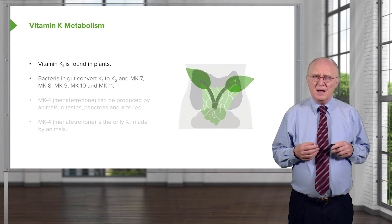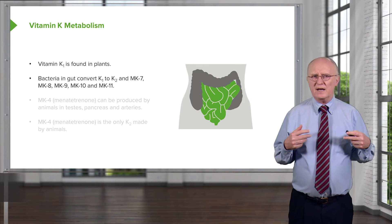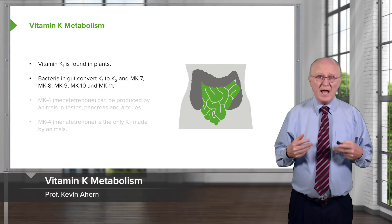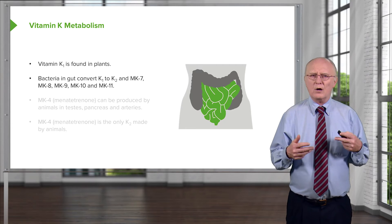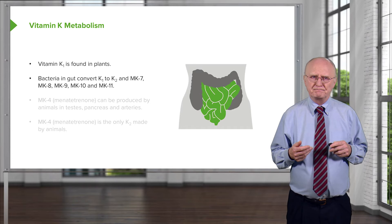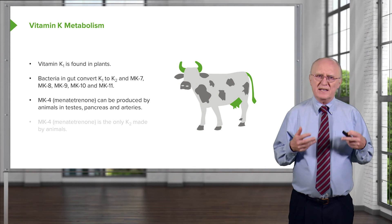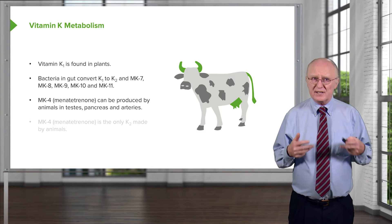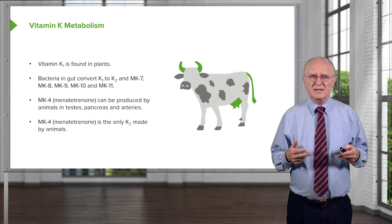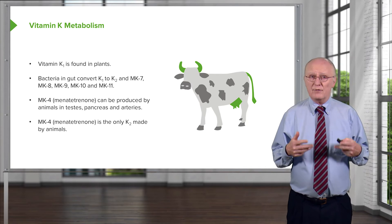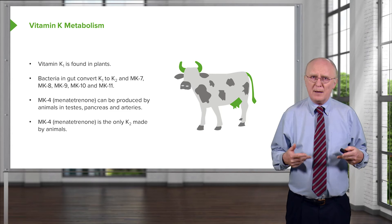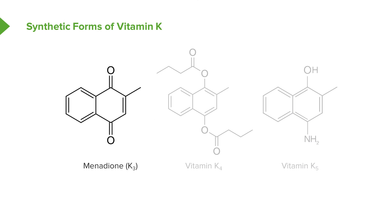Vitamin K1 is found in plants, but bacteria take the vitamin K1 we get in our diet and convert it to vitamin K2, and other forms including MK7, MK8, MK9, MK10, and MK11. So there are quite a variety of these vitamin Ks present in our body. MK4, also known as menatetranone, can be produced by animals in their testes, pancreas, and arteries — and it's the only form of vitamin K2 actually made by animals. Bacteria play a very important role in providing the right vitamin K we need through metabolism residing in our gut. Three synthetic forms of vitamin K are man-made but also function as vitamin K.